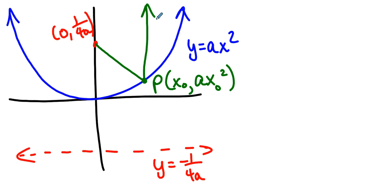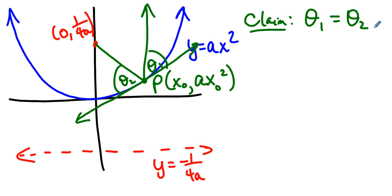What is the reflective property in view? Well, the reflective property in view is if you draw the tangent line at point P, the tangent line to the parabola at point P, the angle of reflection and the angle of incidence are the same. That's the claim. The claim is that theta 1 equals theta 2.